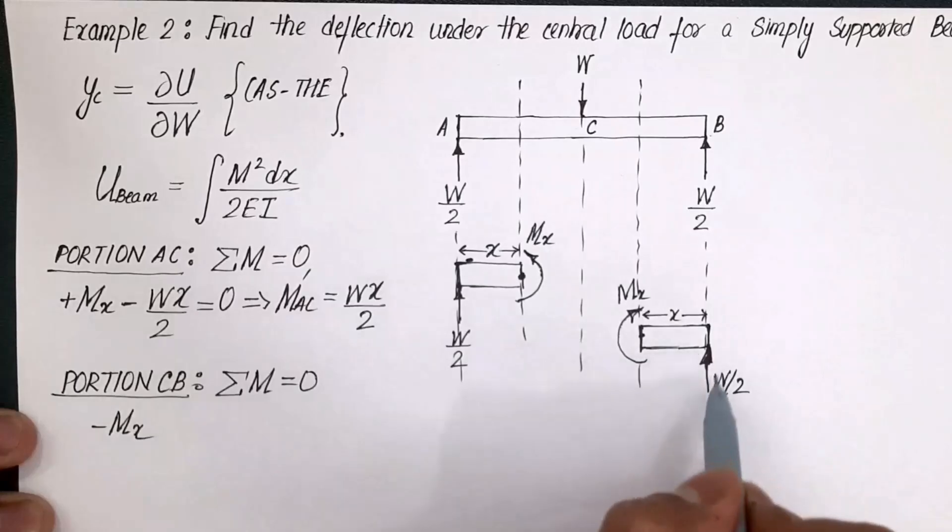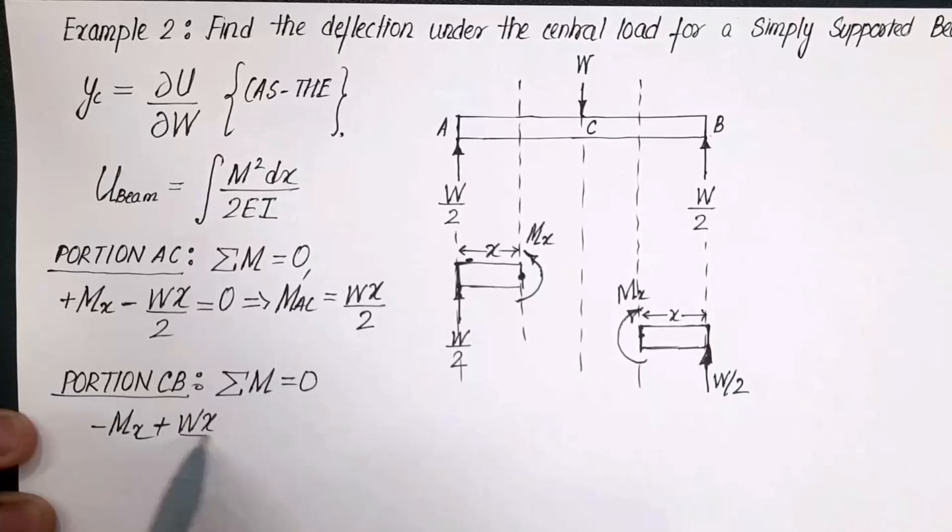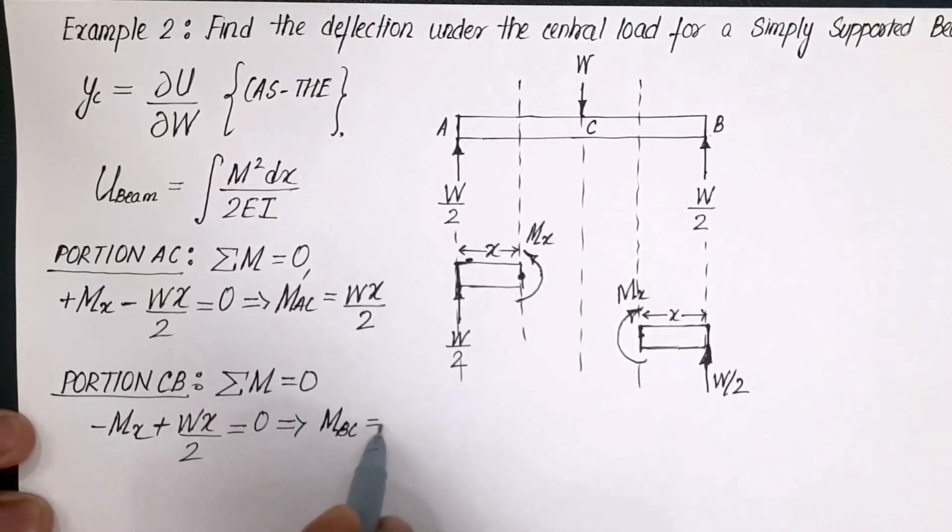Here we go. So minus M_x, W by 2 into x anti-clockwise, therefore plus Wx over 2 is equal to 0. So for any point between C and B, the moment can be computed as Wx over 2. And please note that the value of moment, magnitude of moment, is same in both the cases.